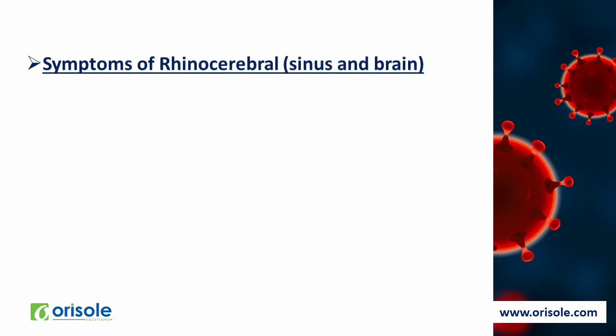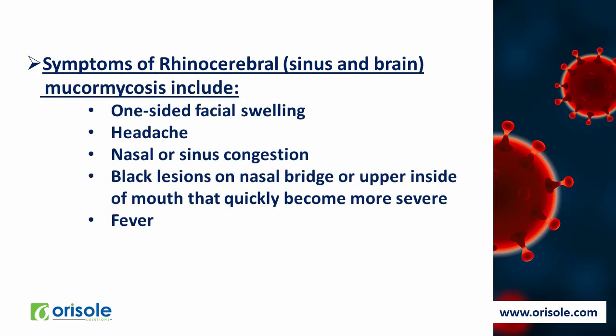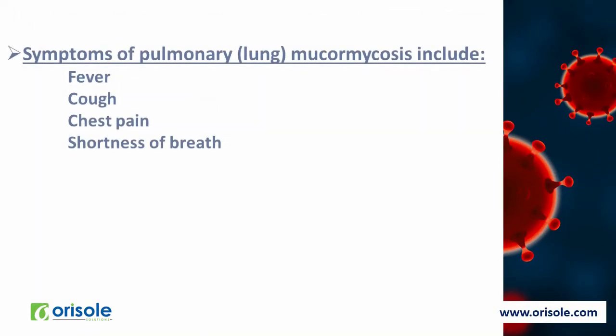The symptoms of rhinocerebral mucormycosis include one-sided facial swelling, headache, nasal or sinus congestion, black lesions on the nasal bridge or upper inside of the mouth that quickly become more severe, and fever. The symptoms of pulmonary or lung mucormycosis include fever, cough, chest pain and shortness of breath.